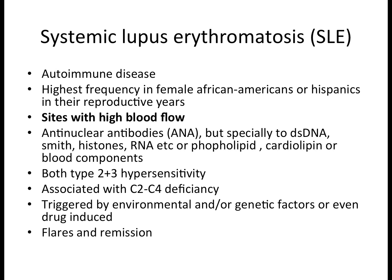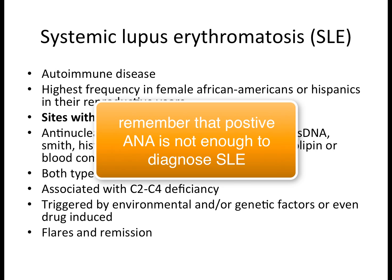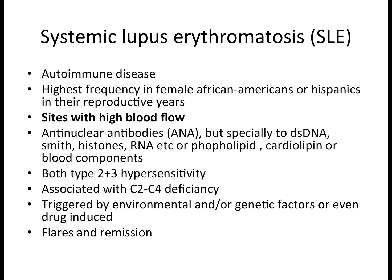As with many autoimmune diseases, there is always a target antigen. In SLE, the target antigen is the nucleus, leading to production of anti-nuclear antibodies (ANA). However, ANA are not specific to SLE — they are seen in many different autoimmune diseases — so a positive ANA test alone cannot confirm SLE.